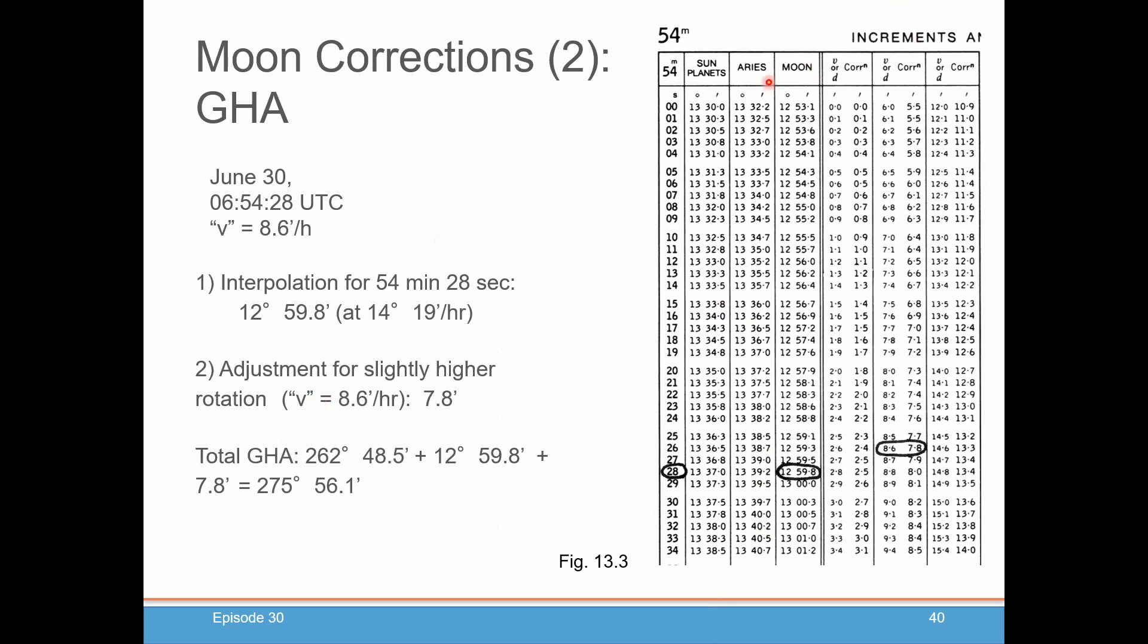Then we go into our increments table for the 54 minutes. And we use our moon column for 28 minutes. And we get 12 degrees, 59.8 minutes. And we'd have to use our V, which we looked up was 8.6. And that comes to 7.8 minutes. And we add those all together. And we get 275 degrees, 56.1 minutes. Again, very similar to our planet calculation with the Vs.